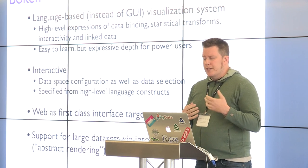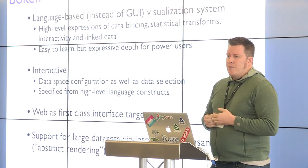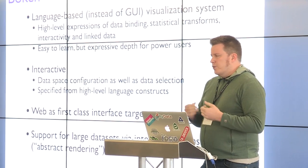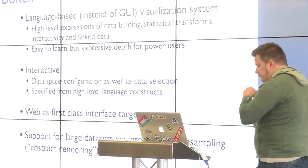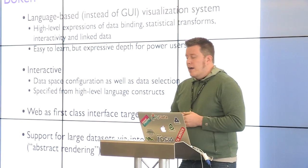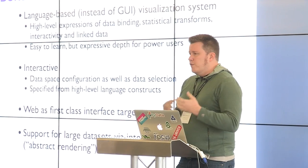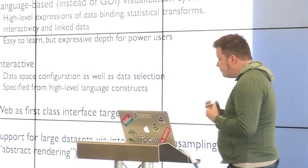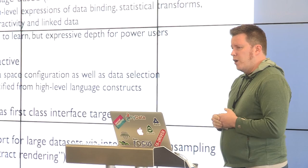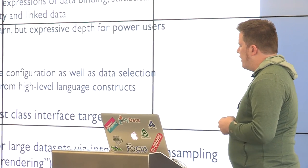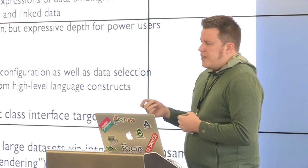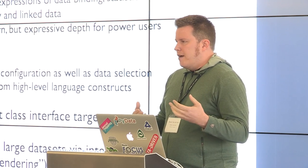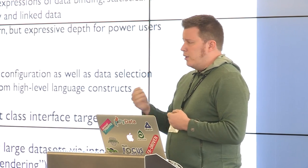We're also interested in interactivity — the ability to have tools that can interrogate your data: hover tools, tools for panning and zooming and inspecting your data. Bokeh is really geared towards large data sets as well. We're just now adding fantastic features for downsampling and doing abstract rendering on very large data sets so that you can have interactive performance on large data sets.